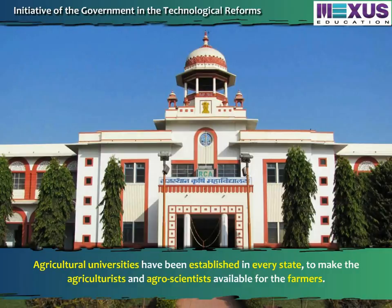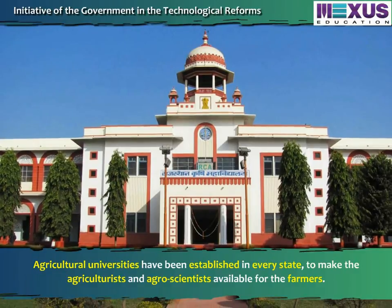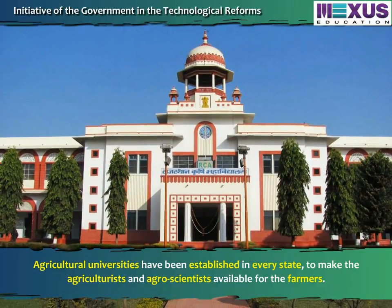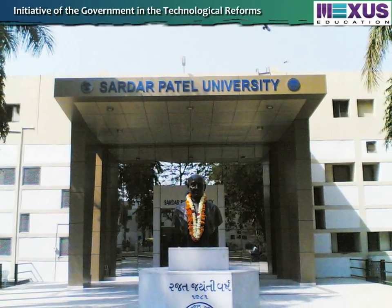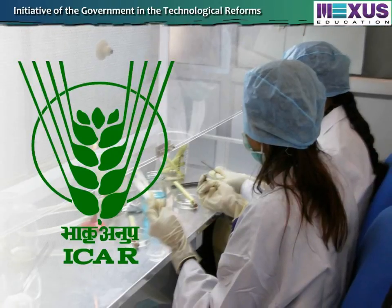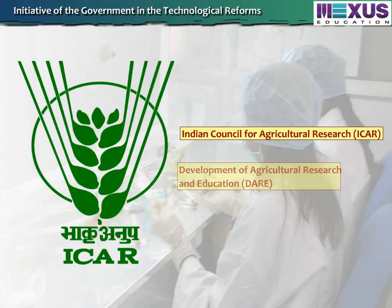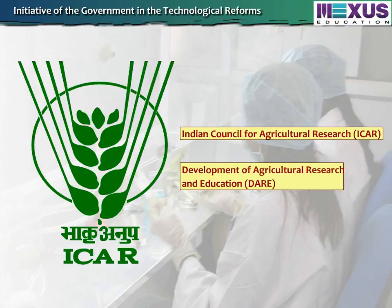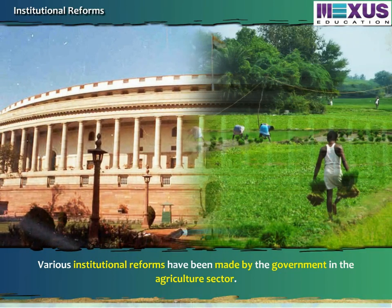To ensure that the farmers get the benefits of agricultural research, Gramsevaks have been appointed. Agricultural universities have been established in every state to make agriculturists and agro-scientists available for the farmers. For example, the Sardar Patel Krushi University, located at Dantivara in the Banaskanta district of Gujarat. Activities of national institutes such as the Indian Council for Agricultural Research (ICAR) and Development of Agricultural Research and Education (DARE) have resulted in increased farm production.